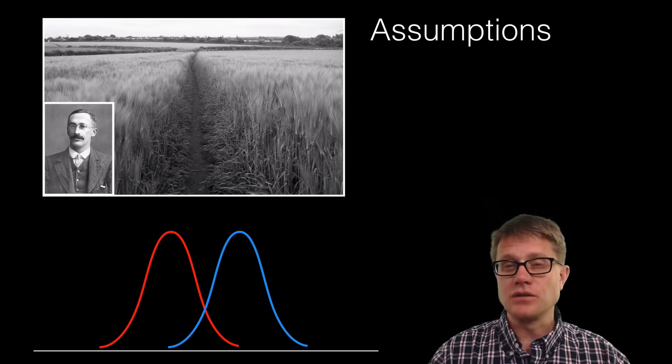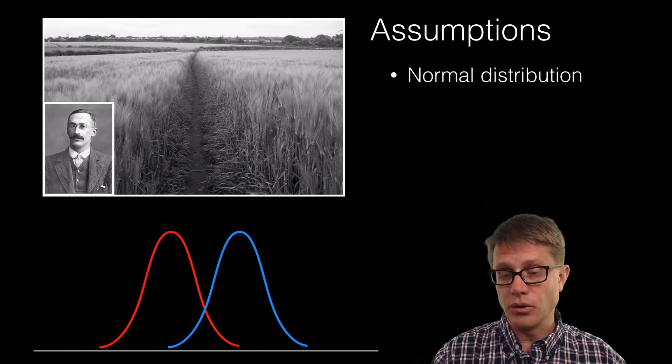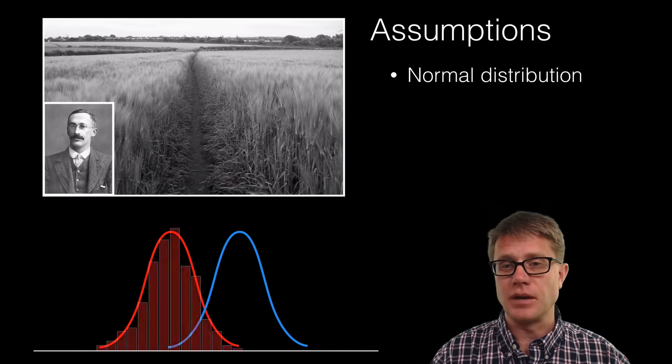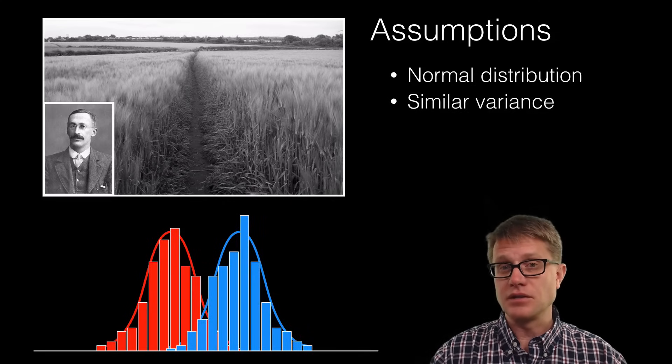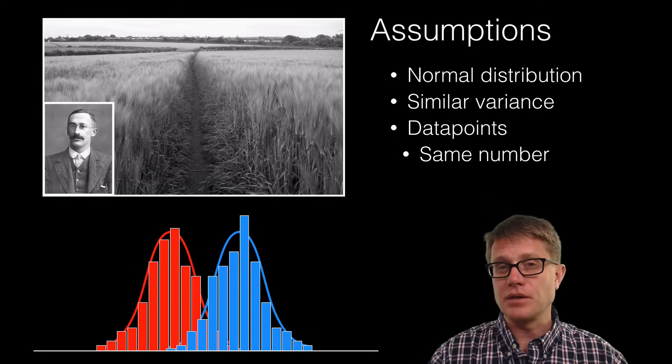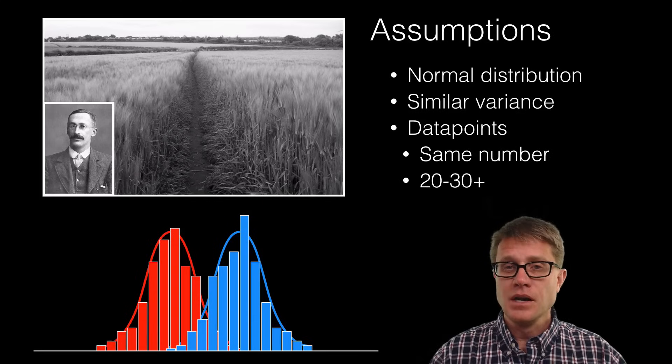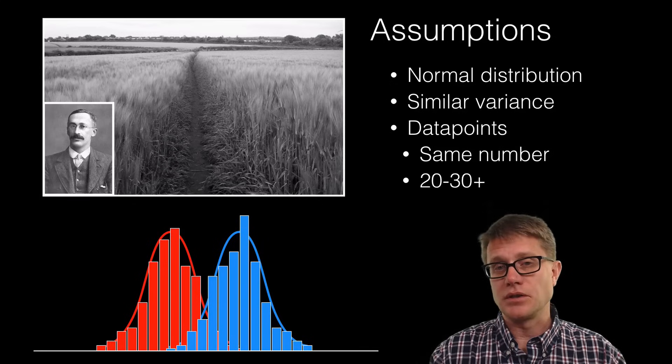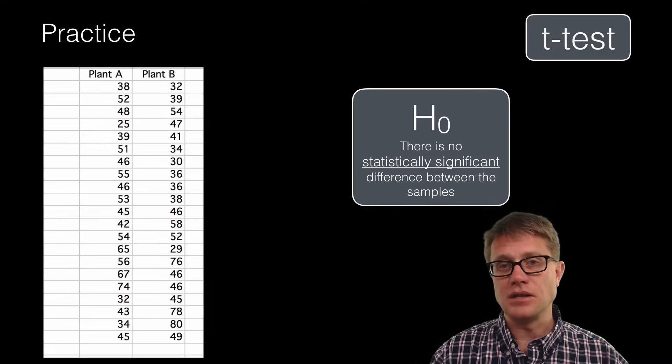There are a few assumptions you have to have when running a t-test. Number one, we should have a normal distribution in both the population and in the sample, but it works really well with a small sample size. We also should have similar variance in each of those samples. And when we're looking at the data points, we should have roughly the same number of data points in either sample. Finally, this works good with low numbers, but you generally want to be in the 20 to 30 range. If we go much higher than that, instead of using a t-test we would actually use a z-test.